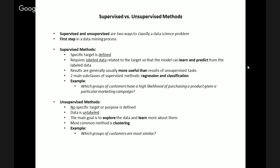A data science problem is unsupervised when no specific target or purpose is defined. The data used for unsupervised methods is unlabeled, which means that it does not have meaningful tags and is not put into classes.